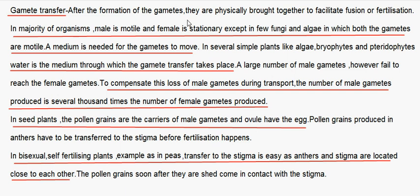Gamete Transfer: After the formation of gametes, they are physically brought together to facilitate fusion or fertilization. In the majority of organisms, the male gamete is motile and the female is stationary, except in some fungi and algae where both gametes are motile. A medium is needed for the gametes to move. In simple plants like algae, bryophytes, and pteridophytes, water is the medium for gamete transfer. Because many male gametes fail to reach the female gamete, the number of male gametes produced is several thousand times that of female gametes.